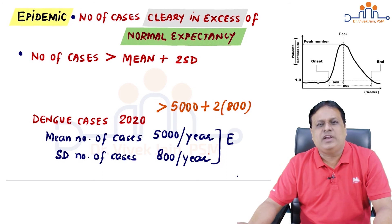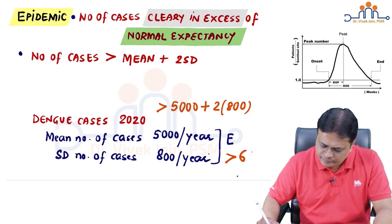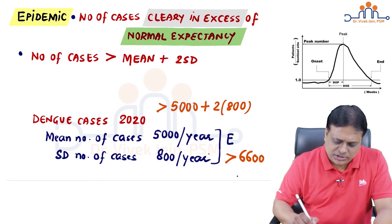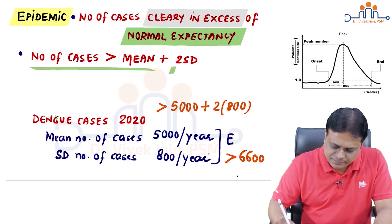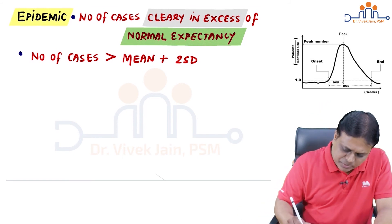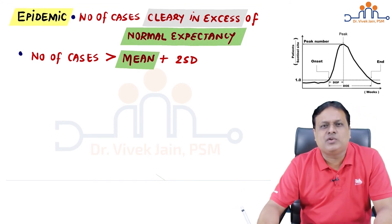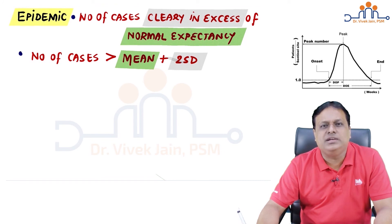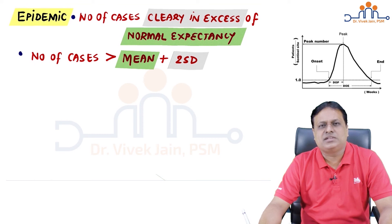Epidemic will be declared when cases exceed mean plus two standard deviations: 5000 plus 2 times 800, which equals 6600. So if cases exceed 6600 this year, epidemic is declared. This formula helps health authorities know when dengue cases are dangerously increasing. In exams, the definition asked is: epidemic is declared if number of cases exceeds the mean by two standard deviations. Both definitions of epidemic are the same — normal expectancy is the mean, and clear excess is defined as two standard deviations.